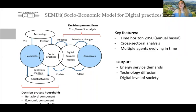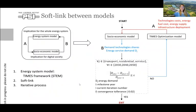The outputs from our models are energy services demand, technology diffusion, and the digital level of society. We couple this socioeconomic model with a TIMES optimization model using a soft link and an iterative process. The outputs from the socioeconomic model — demand, technology share, and energy services demand — are inputs for the TIMES optimization model, which provides technology costs, energy fuel costs, energy supply, and infrastructure development. When a convergence tolerance is reached, the iterations stop and we have results.